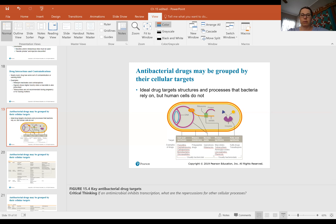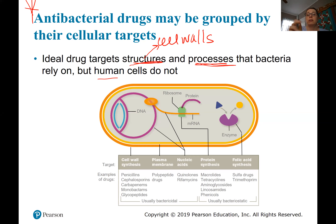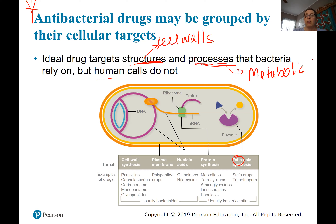This next slide is very important — I'm going to put a big star by it. It says that ideal drugs target structures and processes that bacteria have or go through, but humans do not. Structures that humans don't have — like cell walls — are a great target, because a drug that destroys cell walls doesn't harm us. Bacteria also have different metabolic processes than us, like the folic acid metabolic process, which we'll discuss more later.